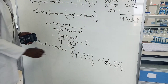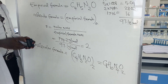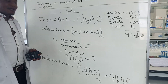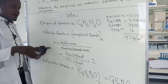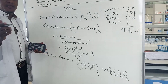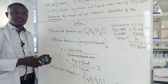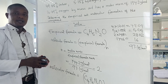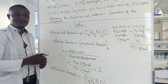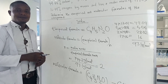This is how we calculate the empirical and molecular formula. In the next tutorial, we shall look at determining limiting reactants. Thanks for watching.